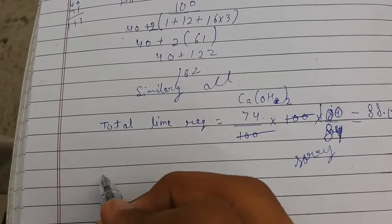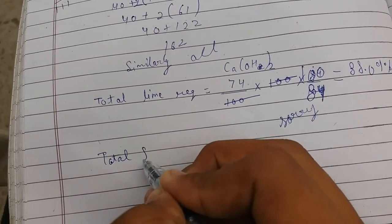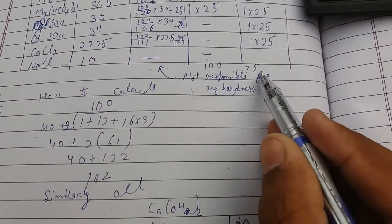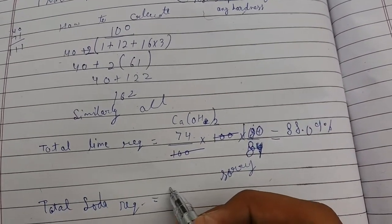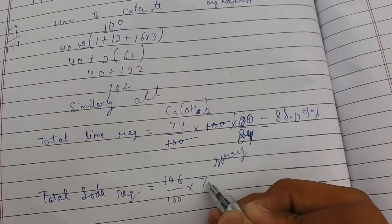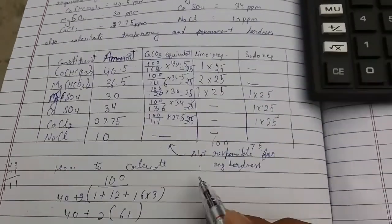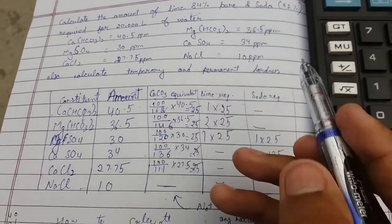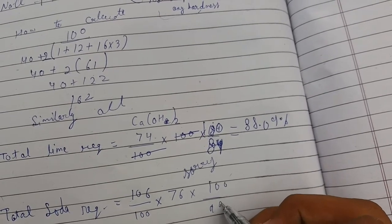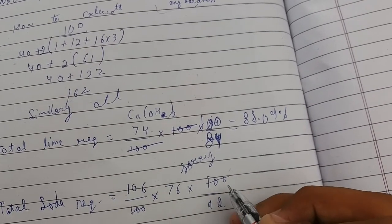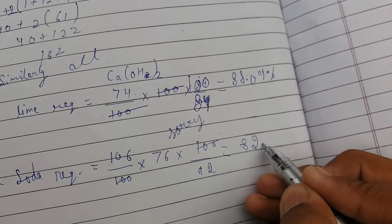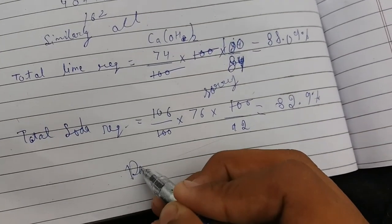Now total soda required is 106 over 100 into 75 into the percentage required. We need 92%, so multiply it with 92. I forgot one thing: we have to also multiply with the liters, so we will multiply it with 2000 liters.